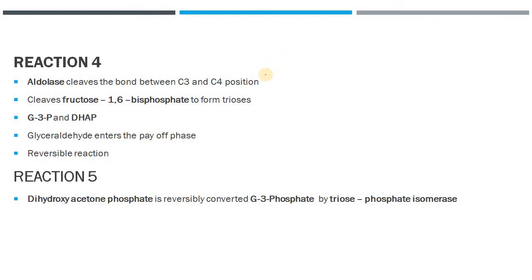The next step is the cleavage reaction carried out by the enzyme aldolase, resulting in the formation of two compounds: glyceraldehyde-3-phosphate and dihydroxyacetone phosphate. The 6-carbon compound glucose has been converted to two 3-carbon compounds. Glyceraldehyde-3-phosphate enters the payoff phase directly, while dihydroxyacetone phosphate undergoes one additional step — being reversibly converted to glyceraldehyde-3-phosphate by triose phosphate isomerase.